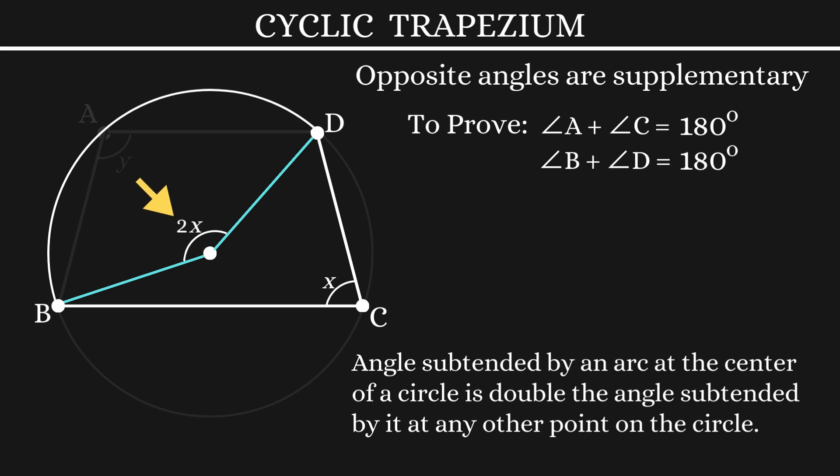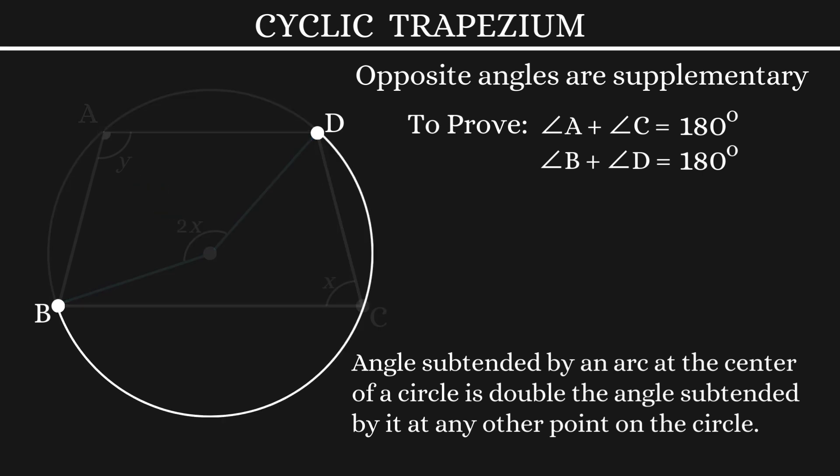Using the same concept, considering this arc, it subtends at point A on the circumference an angle Y. So, the same arc will subtend an angle 2Y at the center.